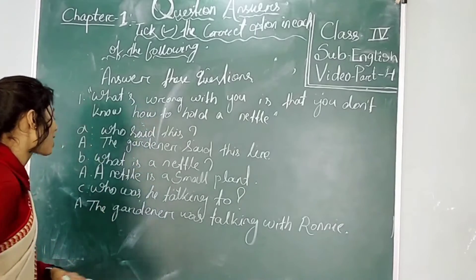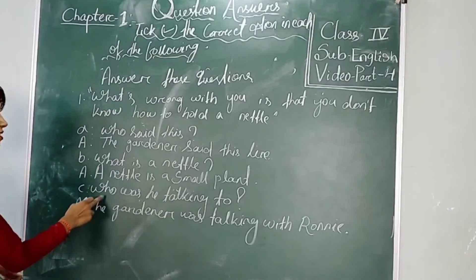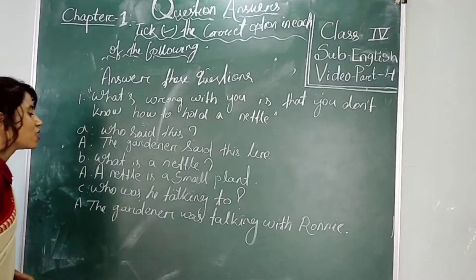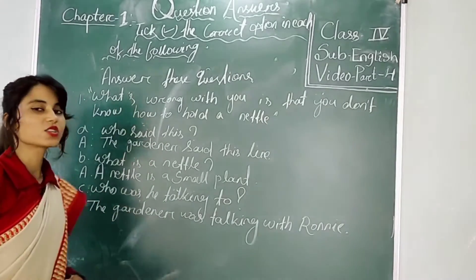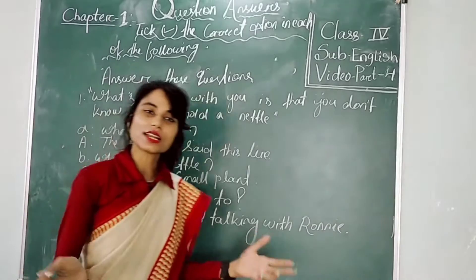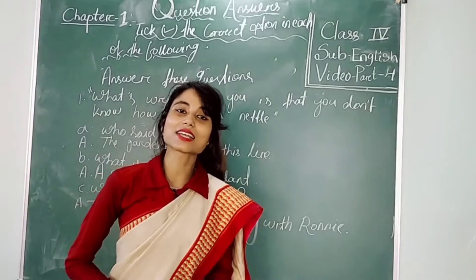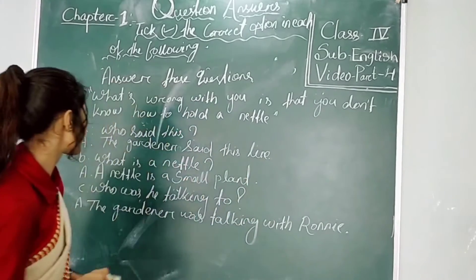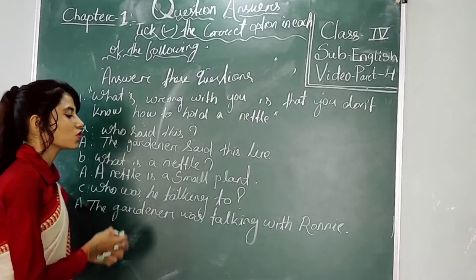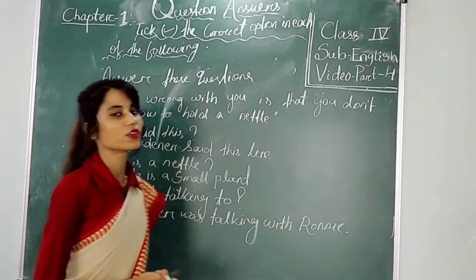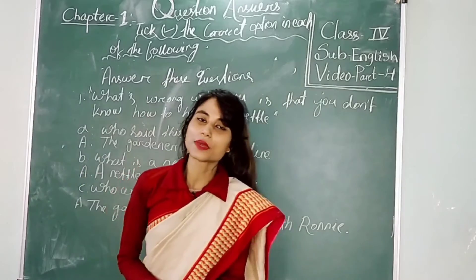Now I am going to discuss the last part — number C — and the question is: who is he talking to? We already got the answer — the answer is that the Gardener was talking with Roni.